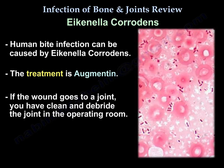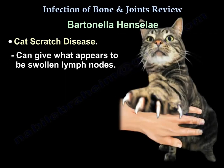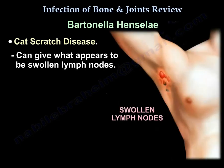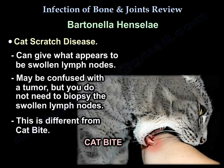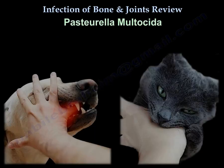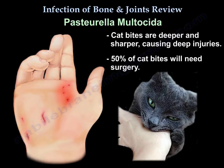Human bite infection can be caused by Eikenella corrodens, and the treatment is augmentin. If the wound goes to a joint, you will need to clean and debride the joint in the operating room. Bartonella henselae can be seen in cat scratch disease and in HIV patients. Cat scratch disease can present with swollen lymph nodes that may be confused with a tumor, but biopsy is not needed. Cat bites are deeper and sharper, cause deep injuries, and 50% will need surgery.